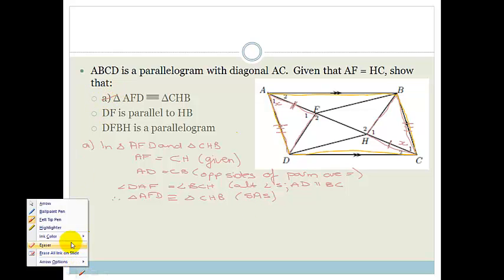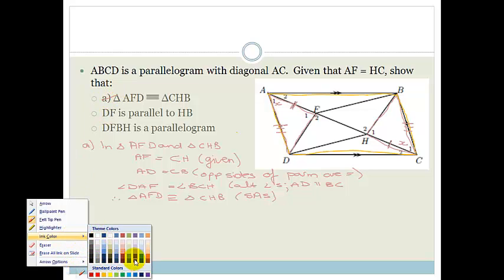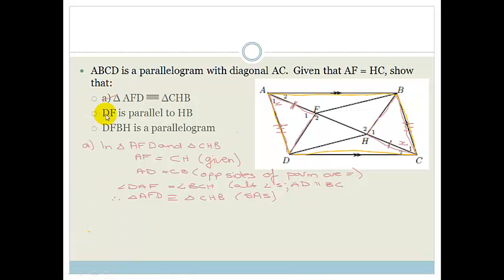Awesome. And before we look at the next one, I'm going to change color. It was a bit pale. I didn't like that. DF is parallel to HB. Then, I want us to prove that DF is parallel to HB. Now, remember, they don't just say to you, prove that the sky is blue and then prove the depth of the ocean. They always try and build on.